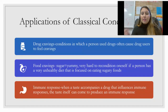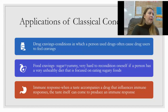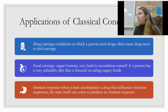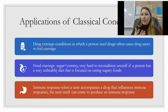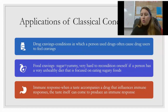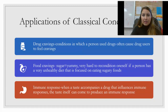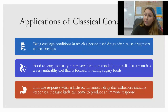Classical conditioning can also apply to immune responses. When a taste accompanies a drug that influences immune responses, the taste itself can come to produce an immune response. For example, a disgusting chalky liquid medicine taken as a child — just the taste of it alone could trigger an immune response and help you feel better, because your brain paired that taste with getting better.